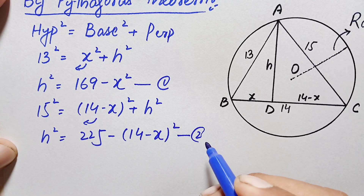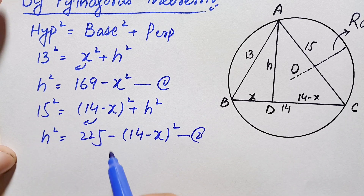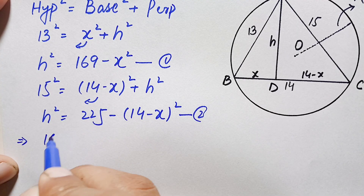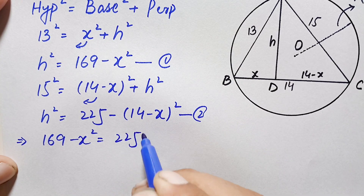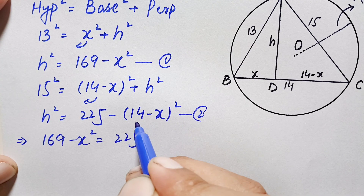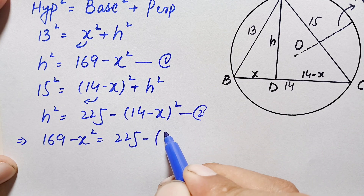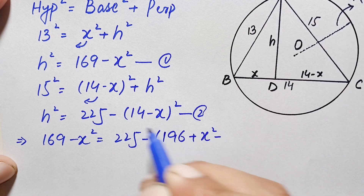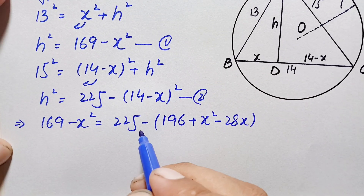Looking at equations one and two, both have h² on the left hand side, so we compare the right hand sides. This gives: 169 − x² = 225 − (14 − x)². We expand (14 − x)² using the identity (a − b)² = a² + b² − 2ab, so 14² is 196, giving 196 + x² − 28x.